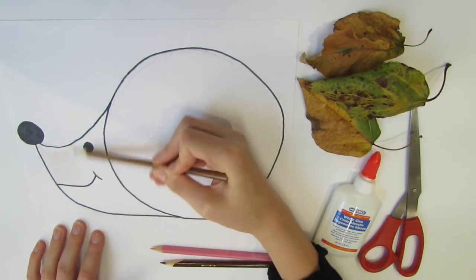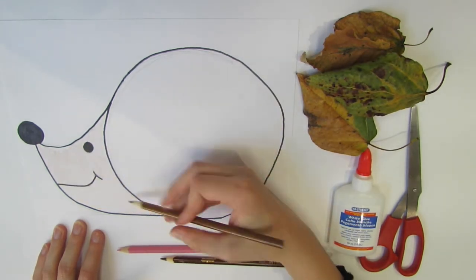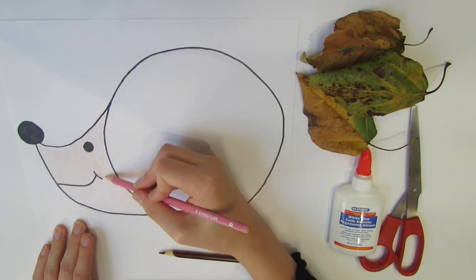Start by coloring the head of your hedgehog. Here I am using a light brown pencil crayon and a light pink pencil crayon to give some color to the cheeks.